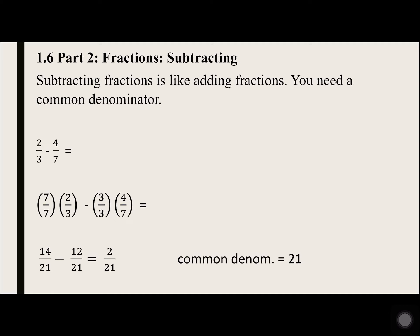2 over 3 minus 4 over 7 – the common denominator equals 21 – 3 times 7 is 21. So the fraction on the left had a 3, so we need to multiply by 7 to get 21. So multiply 2 over 3 times 7 over 7. 7 times 2 is 14, 7 times 3 is 21.